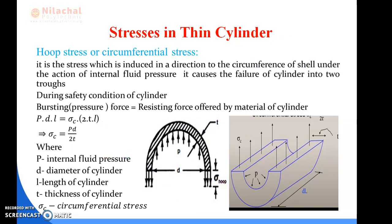Let's go to the derivation of hoop stress and longitudinal stress produced in a thin cylinder. Consider a cylinder where D is the diameter, L is the length, T is the thickness, and P is the internal fluid pressure. We have two types of stress developed: sigma c, the circumferential stress, and sigma l, the longitudinal stress. Due to internal fluid pressure being higher than the withstanding capacity of the cylinder, it may split into two halves or into two sections.